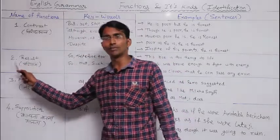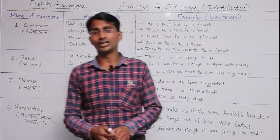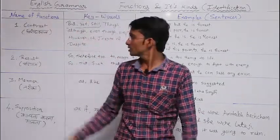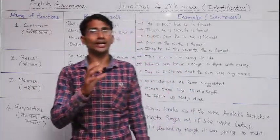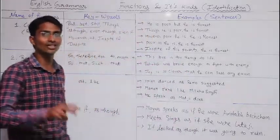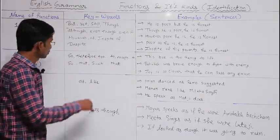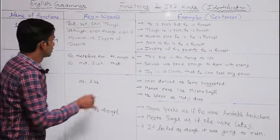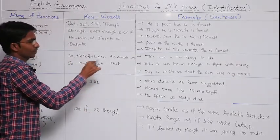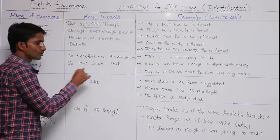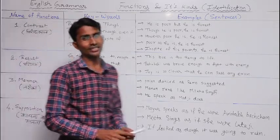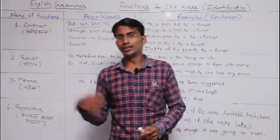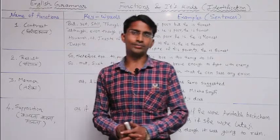Now we look at our second function: 'result.' Result means 'parinaam.' The keywords of the result function are: so, therefore, to, enough to, so that, and such that. These are the keywords of result.